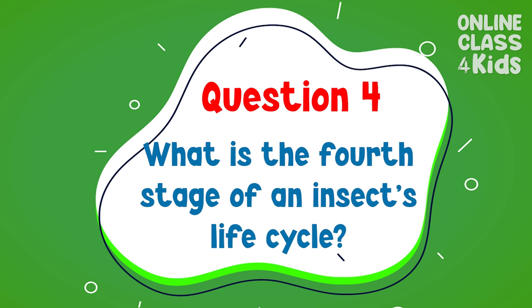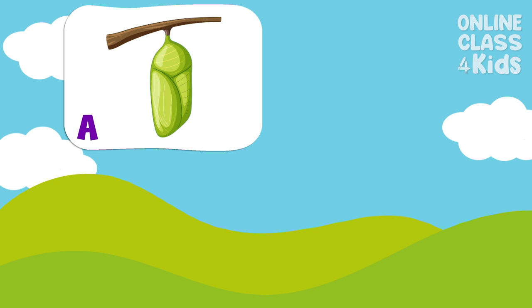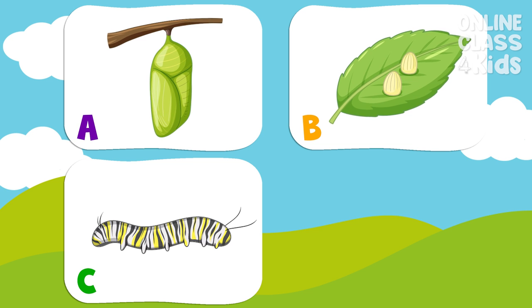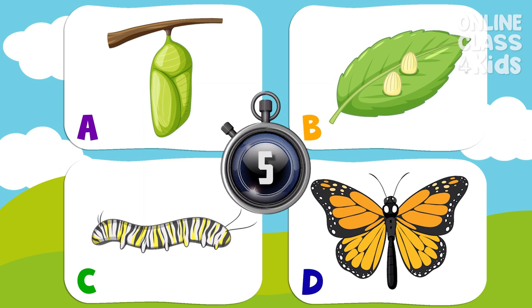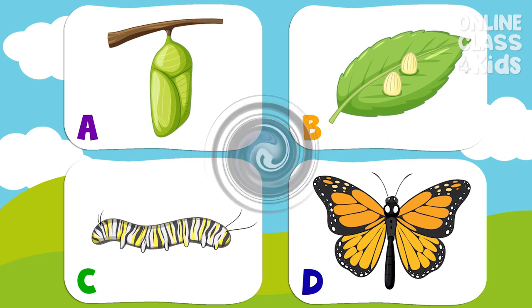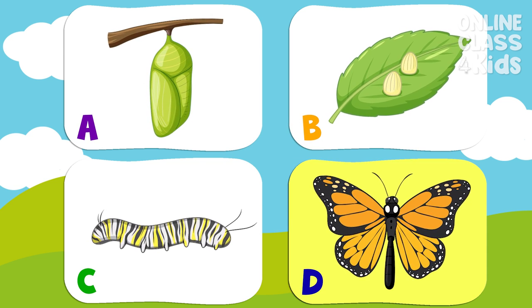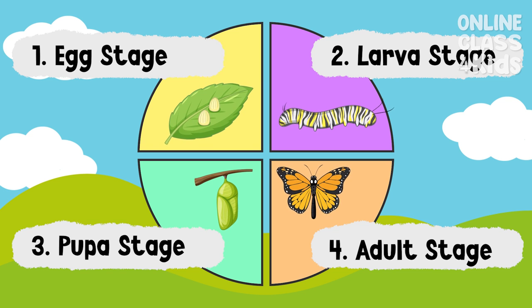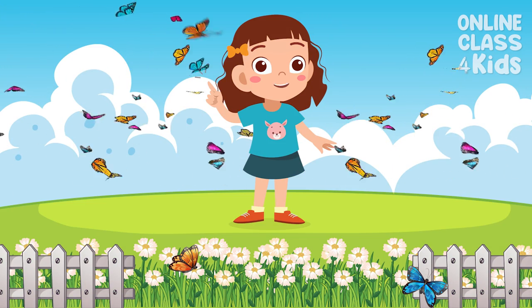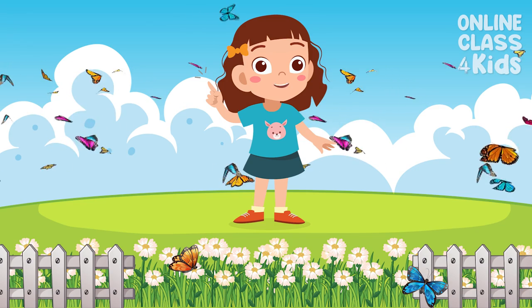What is the fourth stage of an insect's life cycle? The fourth stage of an insect's life cycle is the adult stage. Very good! You did great! I hope you had a wonderful time learning about the life cycle of an insect.